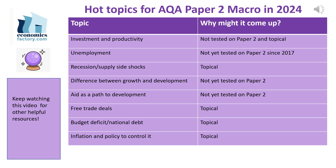Inflation and policy to control it has been very much to the forefront over the past couple of years. Inflation did reach over 11% — more than five times the Bank of England's target. Questions about how that might be tackled and whether monetary policy is an effective way of keeping inflation under control could easily come up on the paper.